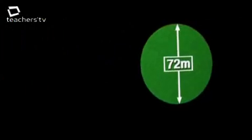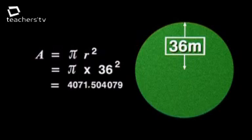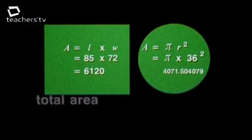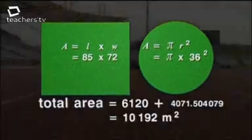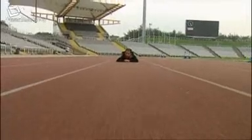The area of the circle formed by the two semicircles is pi r squared. R is the radius — half the diameter of 72 — which is 36. 36 squared multiplied by pi is 4071.504079. Adding them together gives a total area of 10,192 metres squared to the nearest square metre. Now, what further measurement would you need to be able to calculate the area of the track that the athletes actually run in?